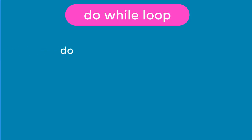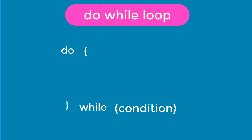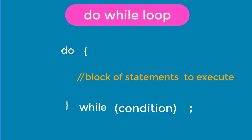The do-while loop has the following general format. The first statement is the 'do', then there is an open brace just after the do. The brace is closed down and there is a 'while' keyword followed by the boolean condition or expression. Then you put a semicolon there to close it. Between the do and the while is your block of statements — that is the statement you want the do-while loop to execute.